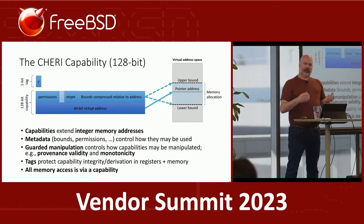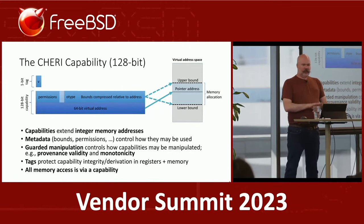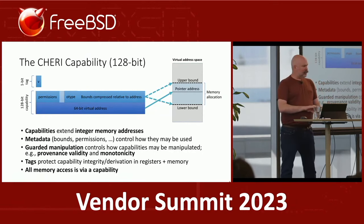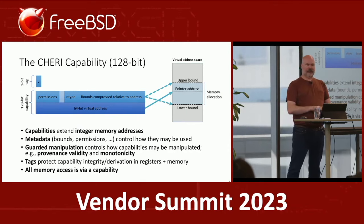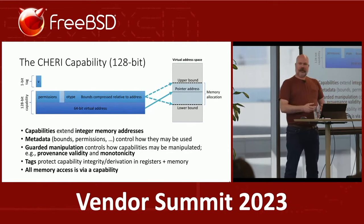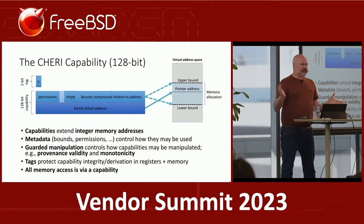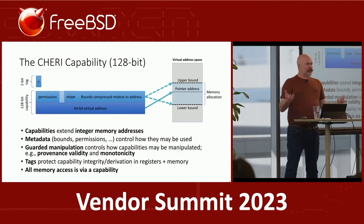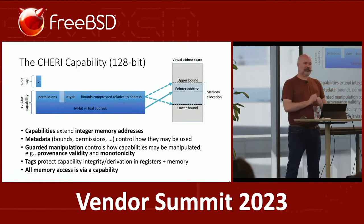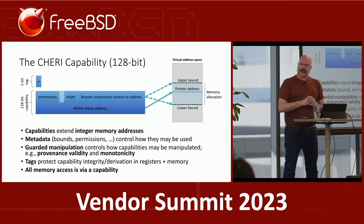All memory access in a CHERI system is via a capability. That could be an explicit capability — one you were given at runtime, manipulated, perhaps chopped up for different allocations — or it can be implicit. One key feature of CHERI is that existing code can continue to run. There's a default data capability and program counter capability, and once those are set up, integer accesses can be performed. In a mode with a broad default capability over the whole process address space you don't get much benefit, but you can run existing code unmodified.